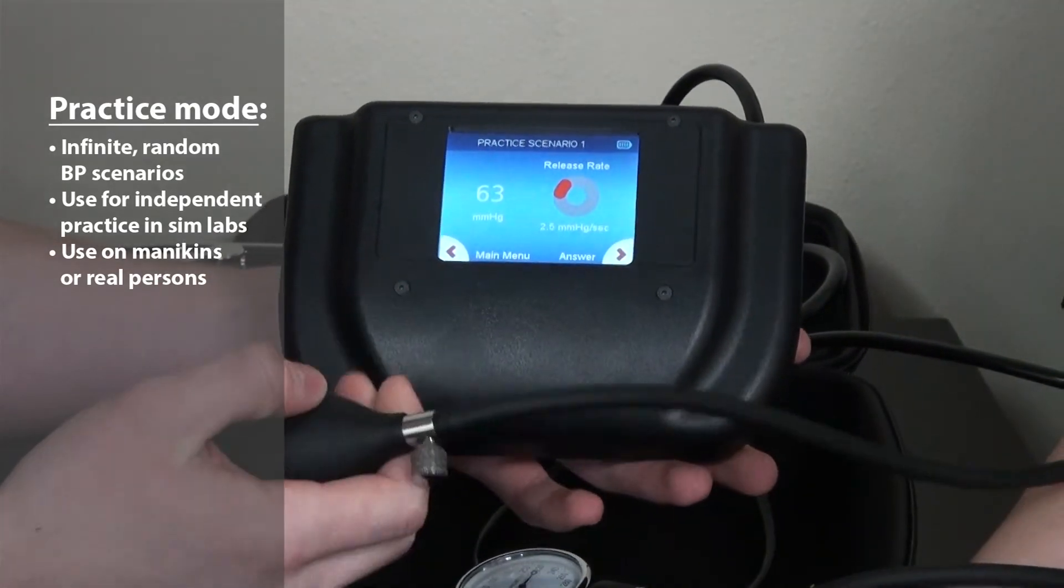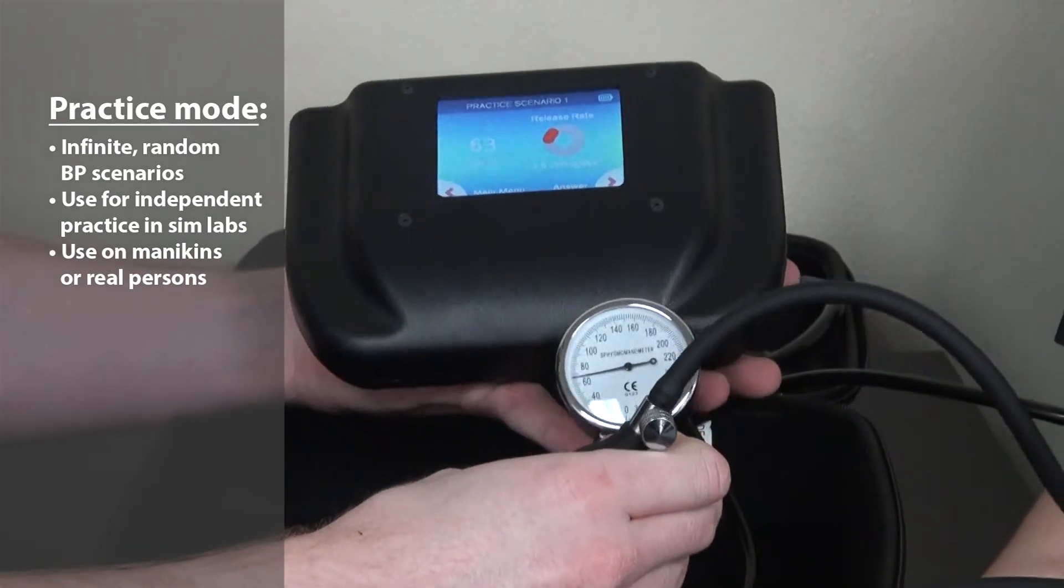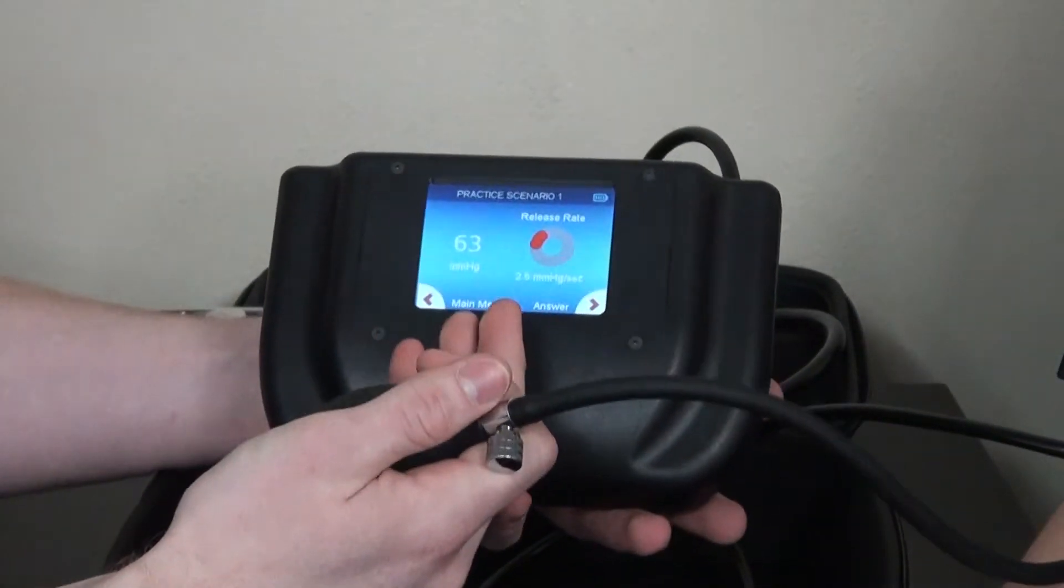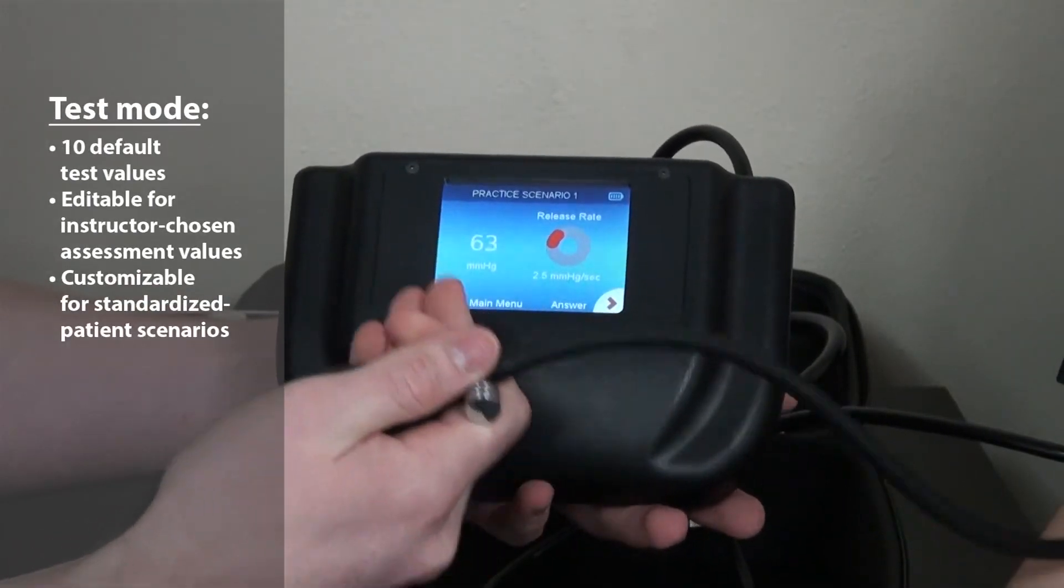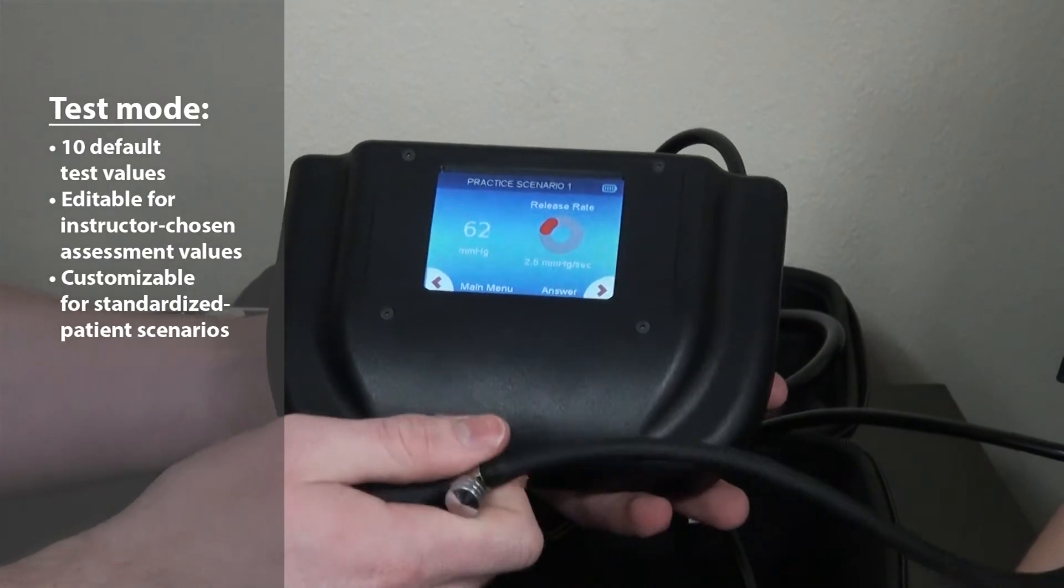The screen depicts the pressure within the cuff that's also on the analog gauge, as well as the release rate showing a too low, too high, or correct release rate.